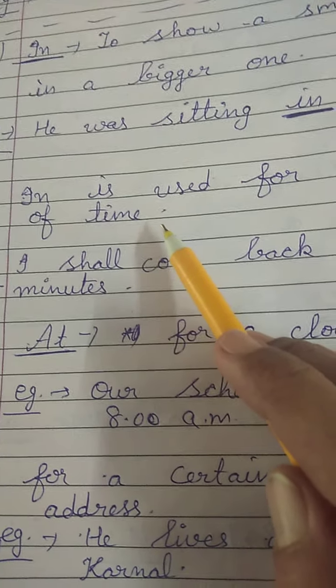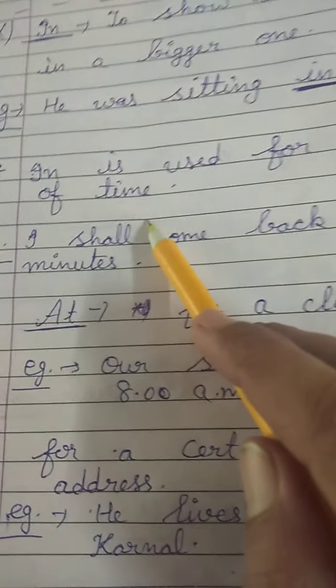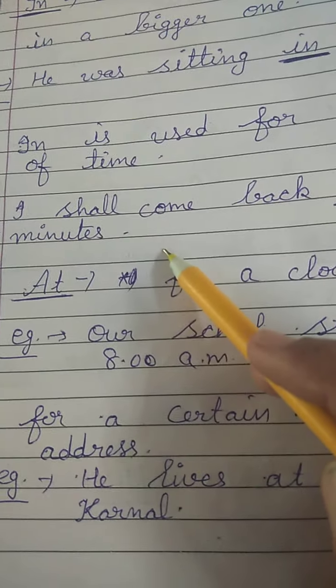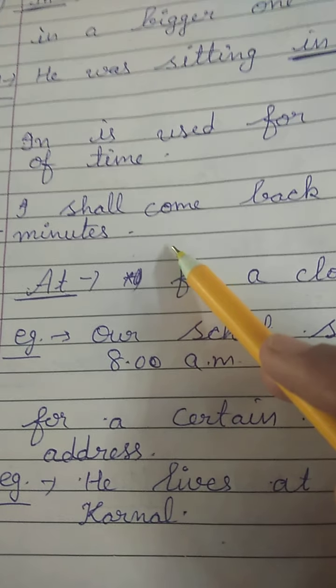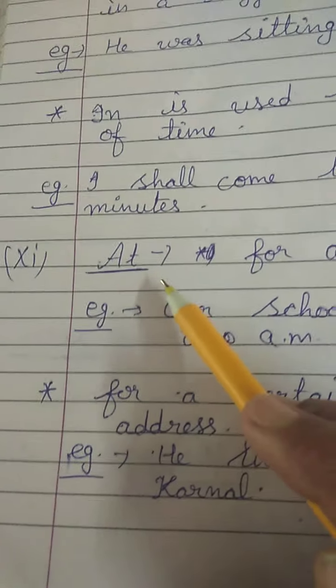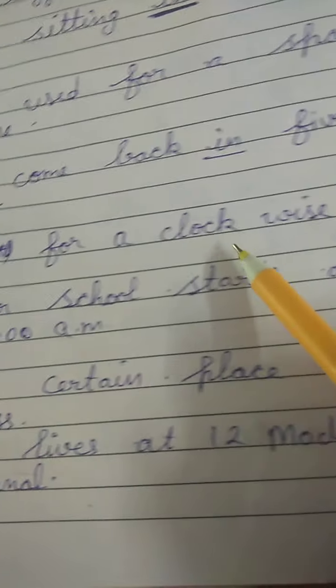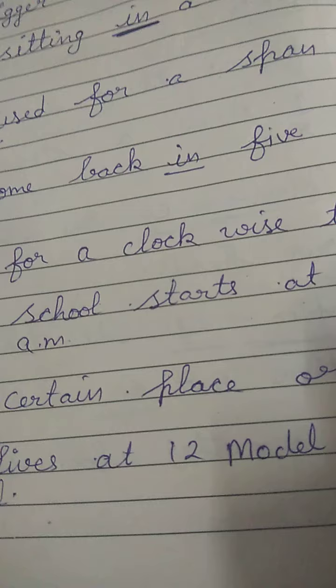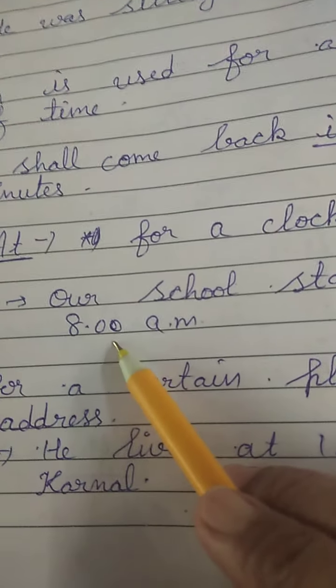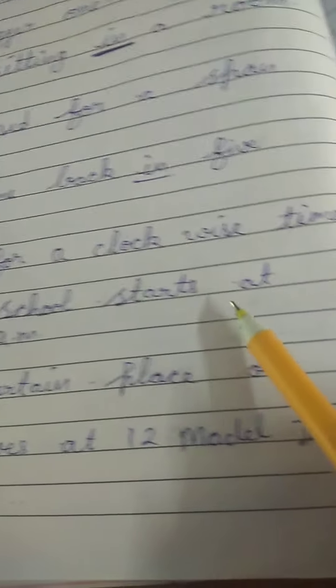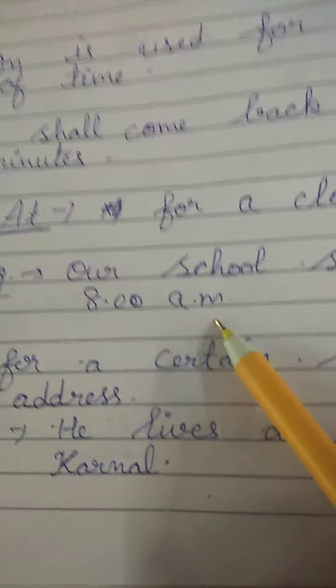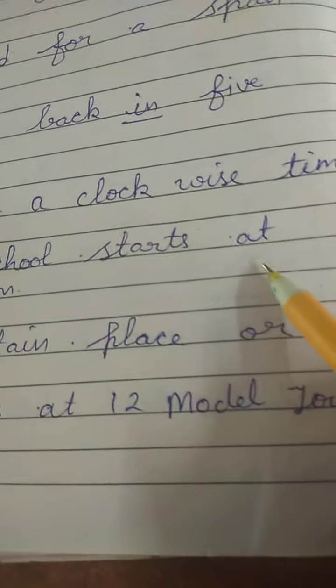'In' is also used for a span of time. For example: I shall come back in five minutes — to show a particular span of time we use 'in'. Next preposition is 'at' for a clockwise time. If you want to specify the exact time, we use 'at'. For example: our school starts at 8 a.m. — we use 'at' to specify the exact time.